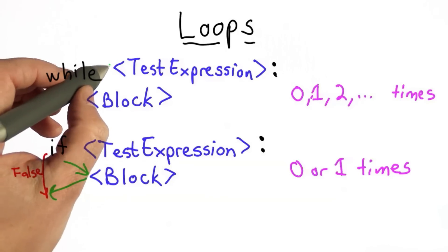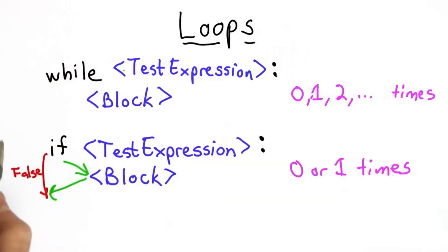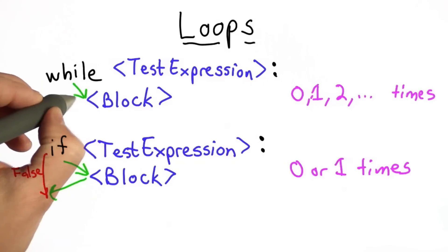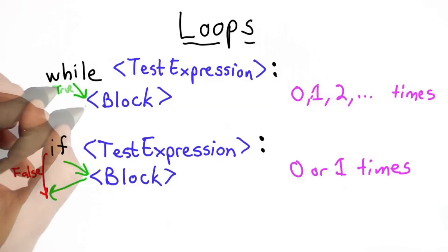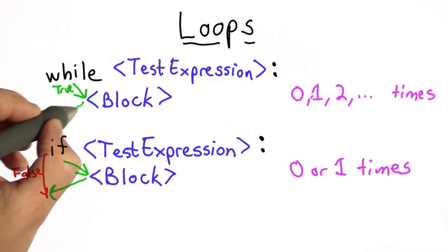With a while, we also start by checking the test expression. If it's true, we go to the block. But now, instead of going to the next statement, after the block, we go back. We try the test expression again.